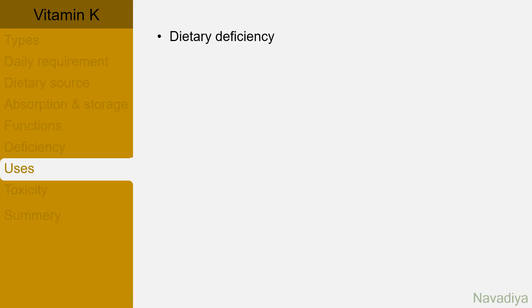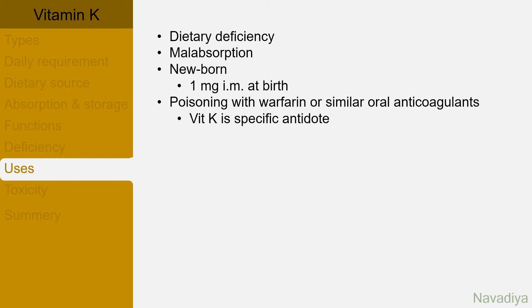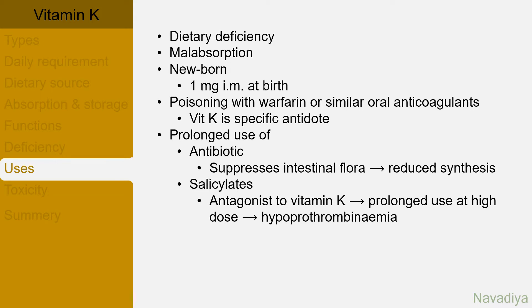Regarding uses: it is used in case of dietary deficiency and malabsorption. In newborns, 1 mg vitamin K by intramuscular route is usually given as prophylaxis. Poisoning with warfarin or similar oral anticoagulants is treated with vitamin K as a specific antidote. It's also used in case of prolonged use of antibiotics, as they might suppress intestinal microflora and reduce in-house production of vitamin K. It can also be used along with salicylates, as they are antagonists to vitamin K and their prolonged use at high dose can cause hypoprothrombinemia. Prothrombin is factor 2.